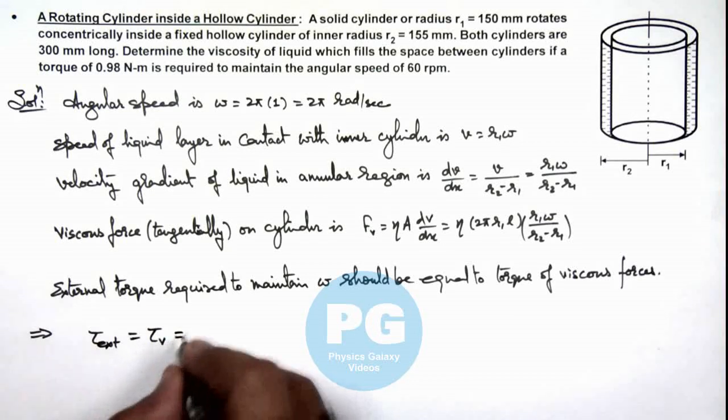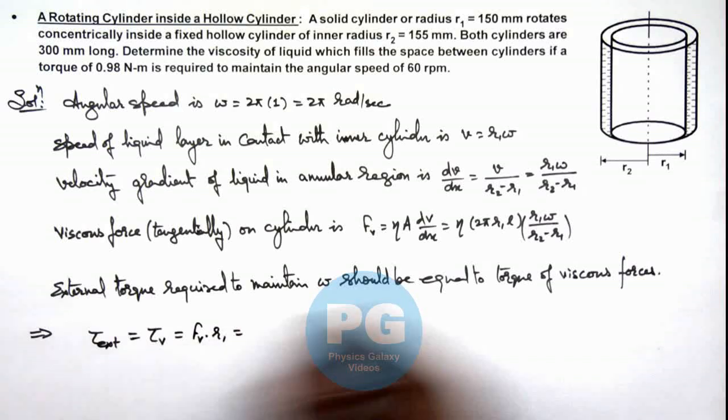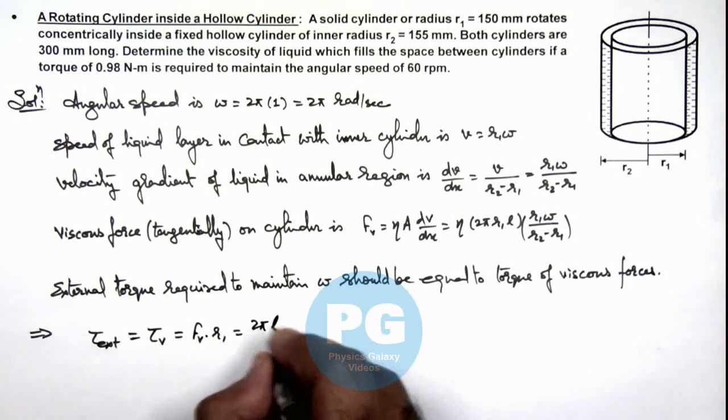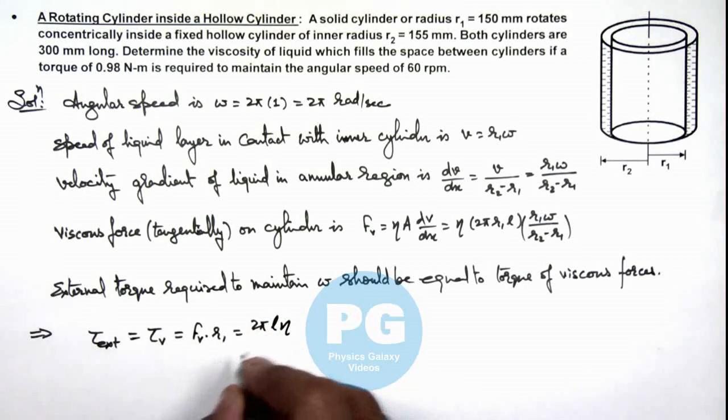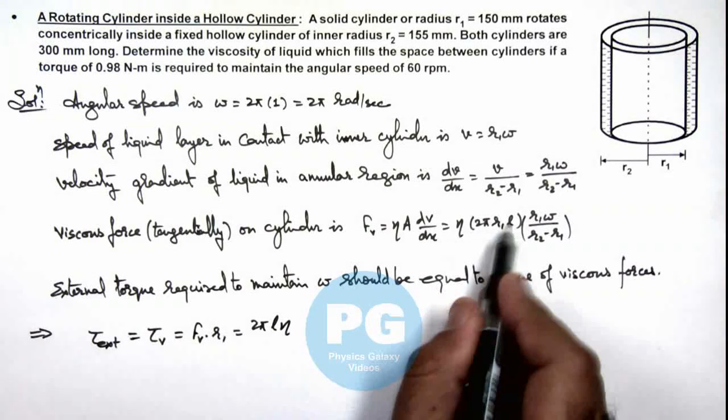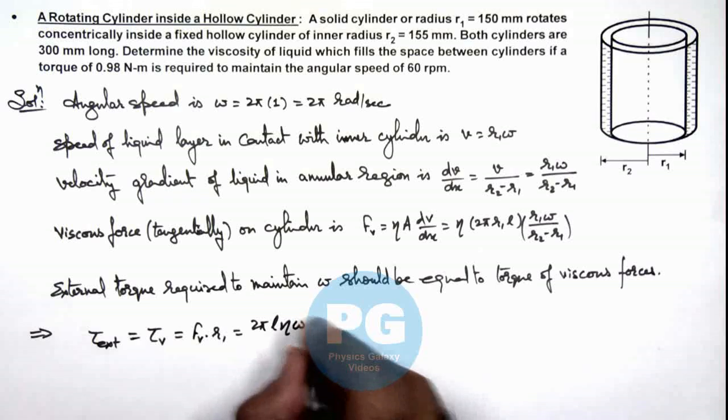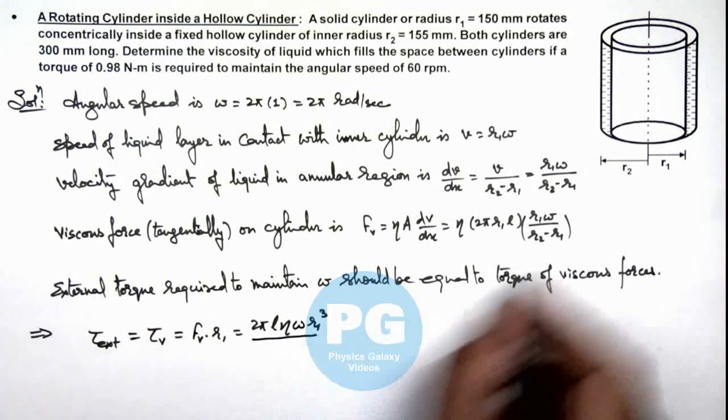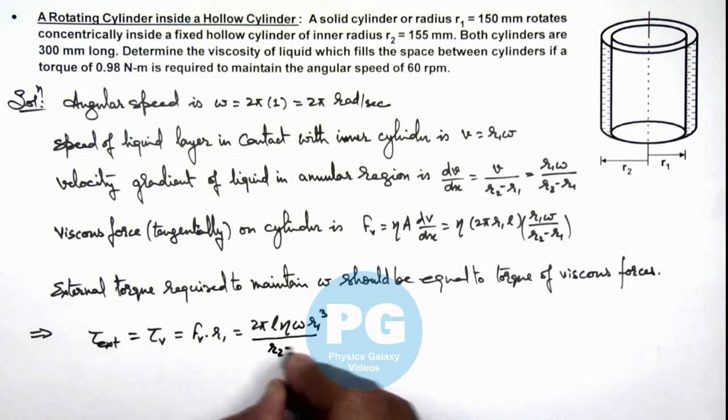If we substitute the value here, this will be 2π L η multiplied by... here you can see this is 2π L η, this becomes omega r1 cube divided by r2 minus r1.